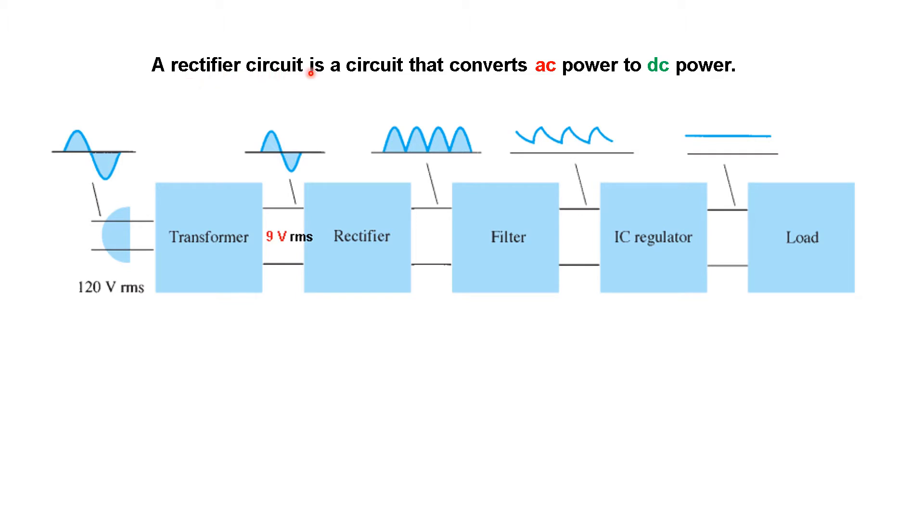So let's first of all recall what is a rectifier circuit. A rectifier circuit is a circuit that converts AC power to DC power. So let's see this is the input 120 volt. We are using a transformer to convert it to lower voltage 9 volt RMS. This may be used for charging of mobile or laptop. Now this is still AC. We have to make it DC.